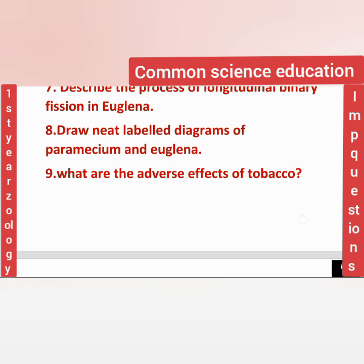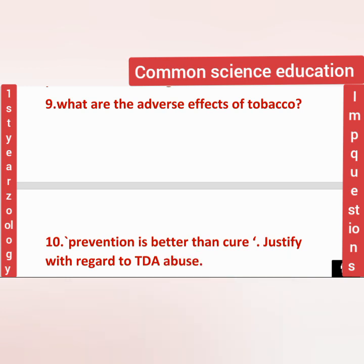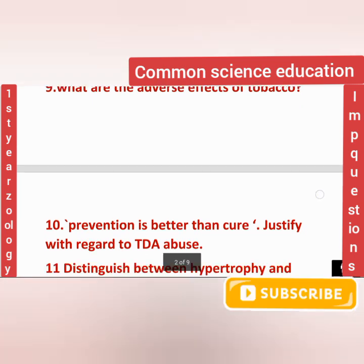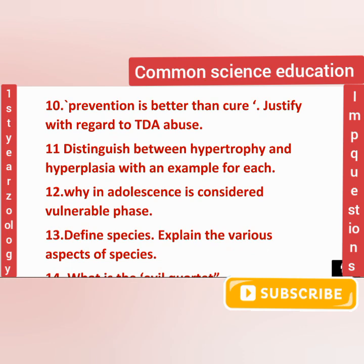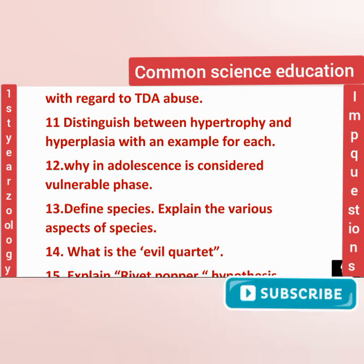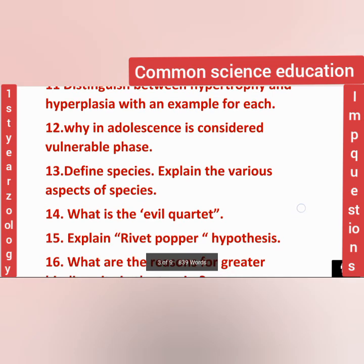From Biology and Human Welfare, the questions that mostly come are: what are the adverse effects of tobacco, prevention is better than cure with regard to drug abuse, distinguish between hypertrophy and hyperplasia, and why adolescence is considered a vulnerable phase. These are mostly the questions that come from this unit.